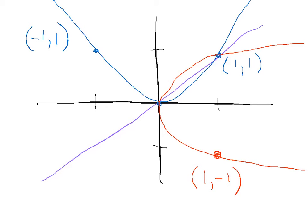As you think more about these particular points and how inverses can be graphically represented, remember that the point negative 2 comma 4 is going to be a part of our function Y equals X squared somewhere up in this direction. What is going to be the point for the inverse function? All you do is take your coordinates for your original function — negative 2 comma 4 — switch the position of those two numbers, and you end up with the point 4 comma 2, which is going to be down this way somewhere.